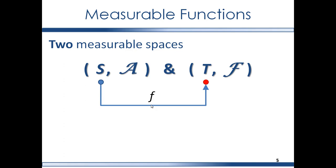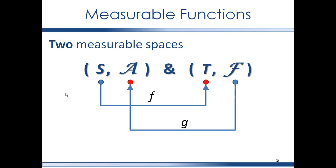We're halfway there to making this a measurable function. f will be a measurable function if the sigma algebra for its range, which is F, is the domain for another function g, and the sigma algebra for its domain, which is A, is the range for another function g. But it is not merely that g has as its domain the sigma algebra of the range of f, and not merely that g has as its range the sigma algebra of the domain of f. Rather, it is because the assignment of values in g's range to the elements in its domain are based upon the assignment of values in f's range to elements in its domain.